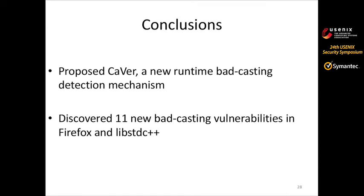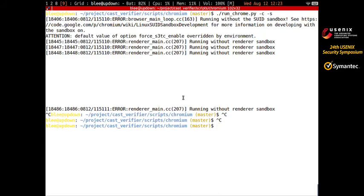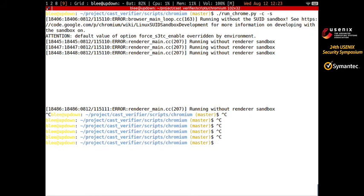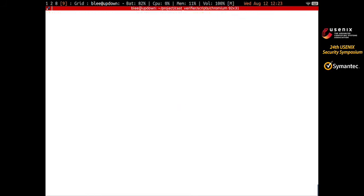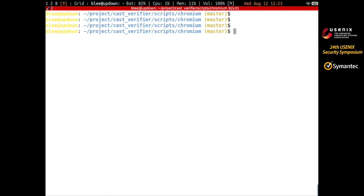In conclusion, we propose CAVER, a runtime bad casting detection tool. CAVER was able to discover 11 new bad casting vulnerabilities in Firefox and standard C++. Let me show a very short demo — I'm going to run the Chromium browser, which is the vulnerable version involving the CVE-2013 exploit we mentioned.